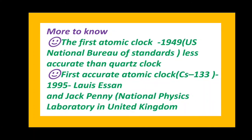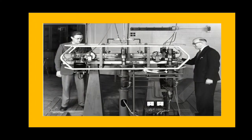International time distribution services also use them. And do you know children, the first atomic clock was invented in the year 1949 by the U.S. National Bureau of Standards, but it was less accurate than the quartz clock. So Jack Parry and Louis Essen, they both invented the first accurate atomic clock in the year 1955 using Cs-133 in the National Physics Laboratory in United Kingdom. You can see Jack Parry and Louis Essen with their first accurate atomic clocks.